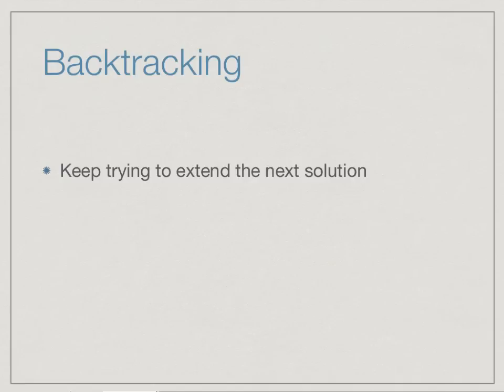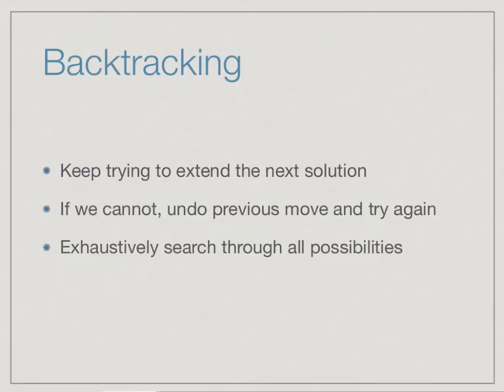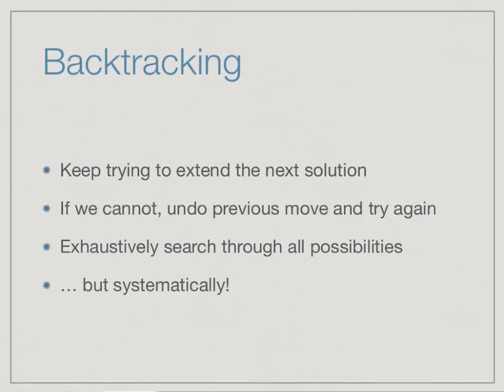This is what backtracking is all about. We keep trying to extend the solution to the next step; if we cannot, we undo the previous move and try again. We exhaustively search through all possible solutions but in a systematic way — going back precisely one step at a time. At each step we have a number of choices; we go through them systematically, and when we exhaust all choices at one level we report failure to the previous level, which then tries its next choice.